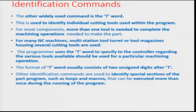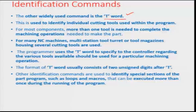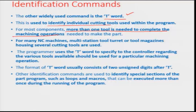There are other identification-type commands as well. For example, the T word represents the tool number. You could have tool numbers T01 or T02 in a magazine and choose one over the other using this word in the program. This is used to identify individual cutting tools within the program, since more than one tool is typically needed to complete a machining operation. An identification number serves to distinguish one tool from another, and T words are widely used for multi-station tool turrets or tool magazines.